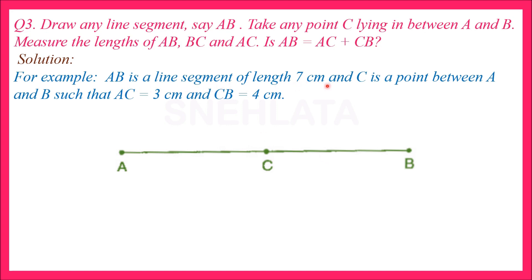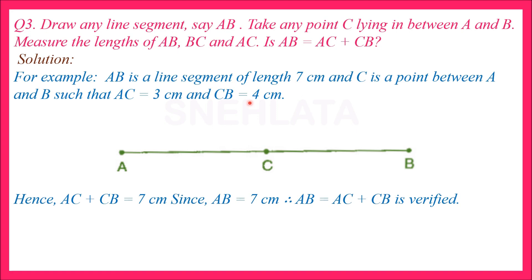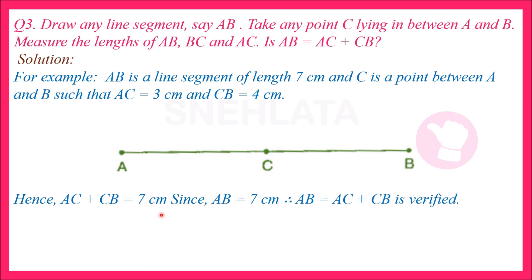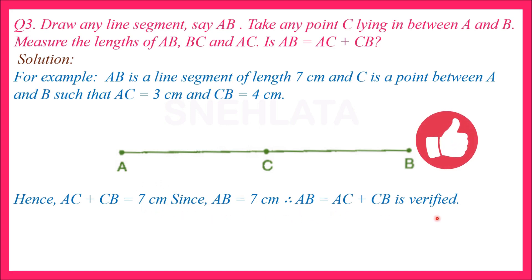Solution: AB is a line segment of length 7 cm, and C is a point between A and B such that AC is equal to 3 cm and BC is equal to 4 cm. Maine in lengths ko measure kiya - mera AC 3 cm aaya aur CB 4 cm aaya. Agar aapne point C thoda sa is side liya hai to aapki ye lengths differ kar sakti hai. AC plus CB add karne par 7 cm aaya - AC 3 tha aur CB 4 tha, so 3 + 4 = 7 cm. Line segment AB ki length bhi 7 cm thi. Therefore AB is equal to AC plus CB is verified.